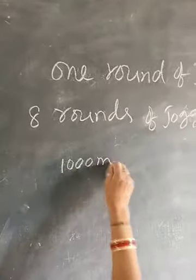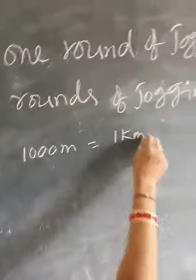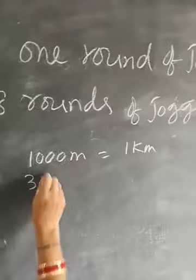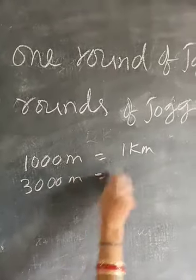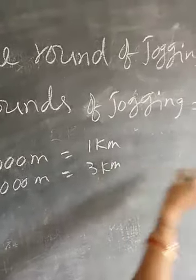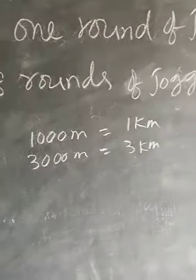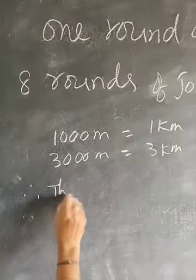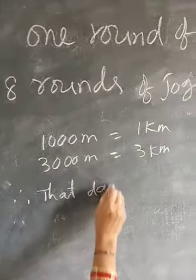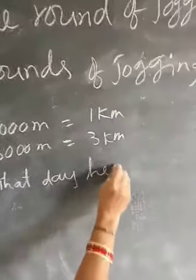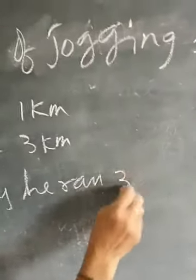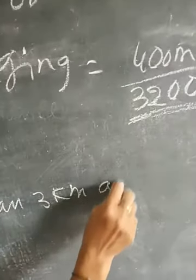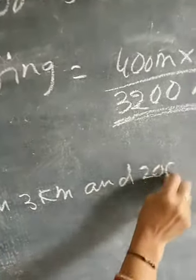Since 1000 meters equals one kilometer, 3000 meters equals three kilometers, and there are 200 meters remaining. So that day Devi Prasad ran three kilometers and two hundred meters.